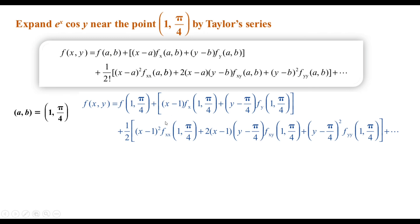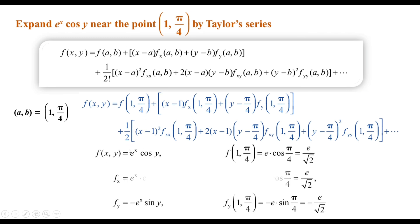We write f(x, y) and estimate the function value at the point (1, π/4), which gives e/√2. The first-order partial derivative with respect to x is e^x · cos(y), and at (1, π/4) it is again e/√2. Similarly, the first-order partial derivative with respect to y evaluated at (1, π/4) is −e/√2.